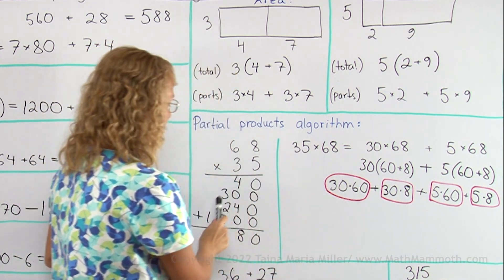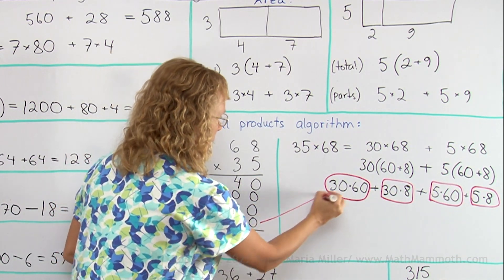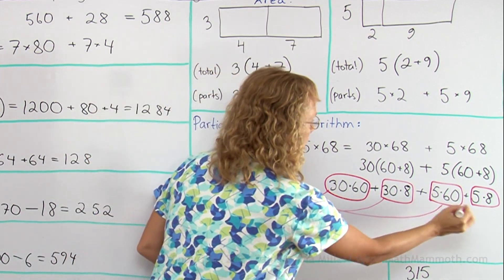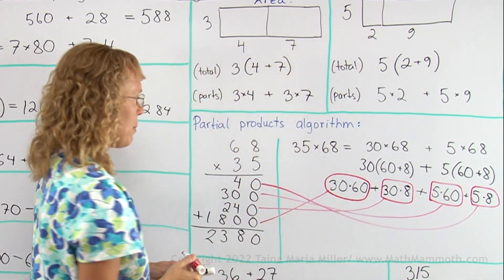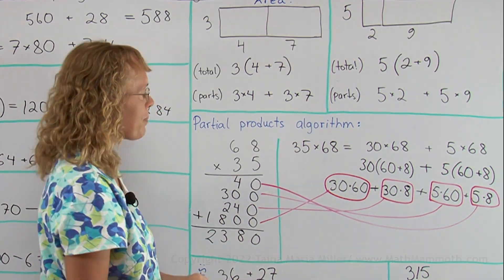And they also have the same multiplications as we had here. 30 times 60 is the last one here. 30 times 8 is that one there. 5 times 60 is this one and then 5 times 8 is that one. And then they are added and of course you will get the same answer.